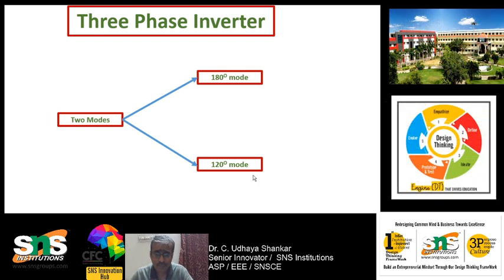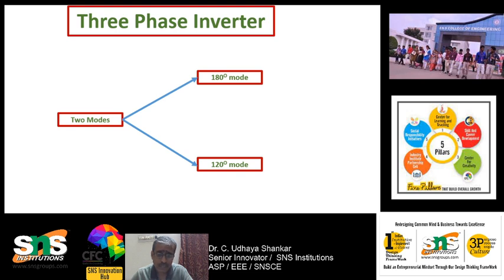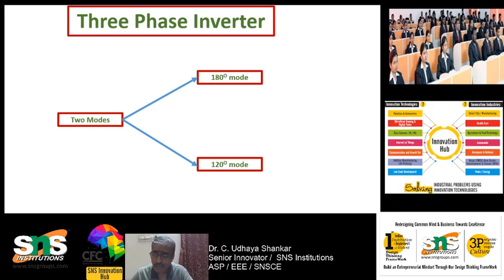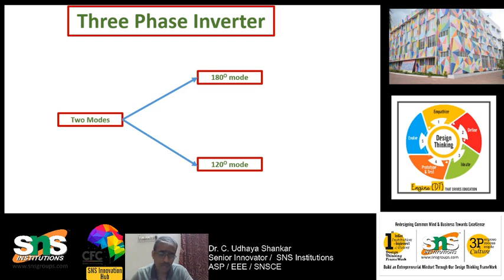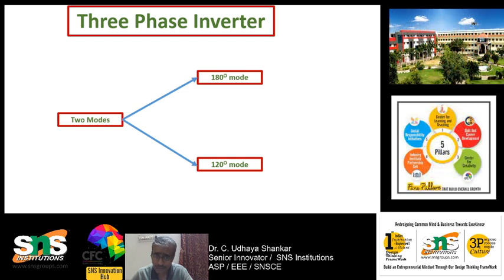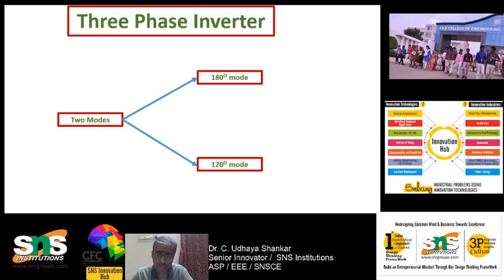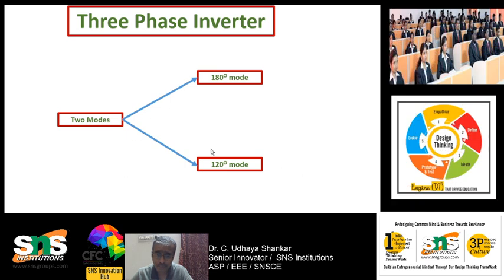The advantage of the 180-degree mode is that the frequency of getting short-circuited is very less. In the 120-degree mode there is a small delay between the conduction of two transistors in the same leg, and because of this there is very less chance — or no chance — of the supply getting short-circuited. But we have to use a high-rating device, which is the main drawback of the 120-degree mode. In 180-degree mode there are more chances of getting short-circuited, but the voltage rating of devices is much reduced and therefore cost is also reduced.